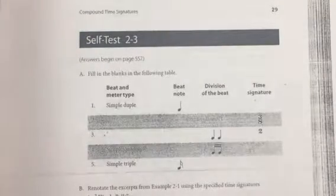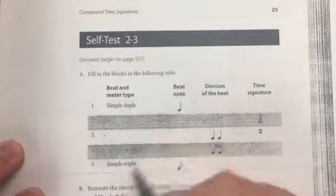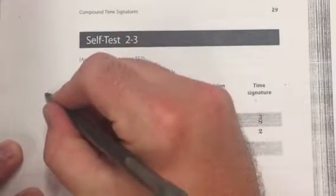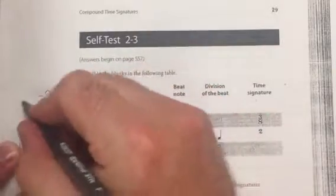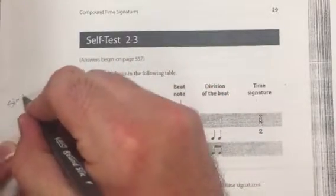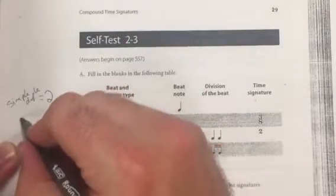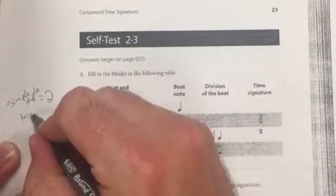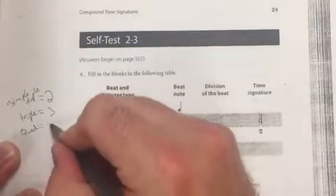Now it's important that you understand. I'm going to work in the margins over here. When you have a simple duple time signature, the top number is going to be 2. That's always going to happen. So simple duple is going to have a top number of 2. Simple triple is going to have a top number of 3. Simple quadruple, the time signature is going to have a top number of 4.